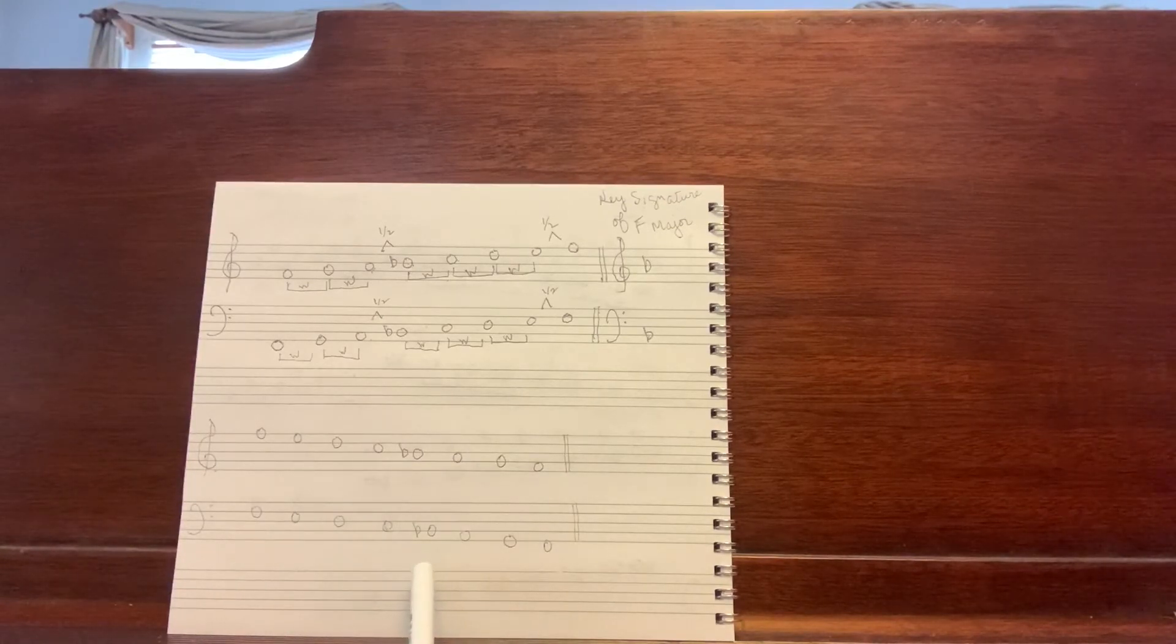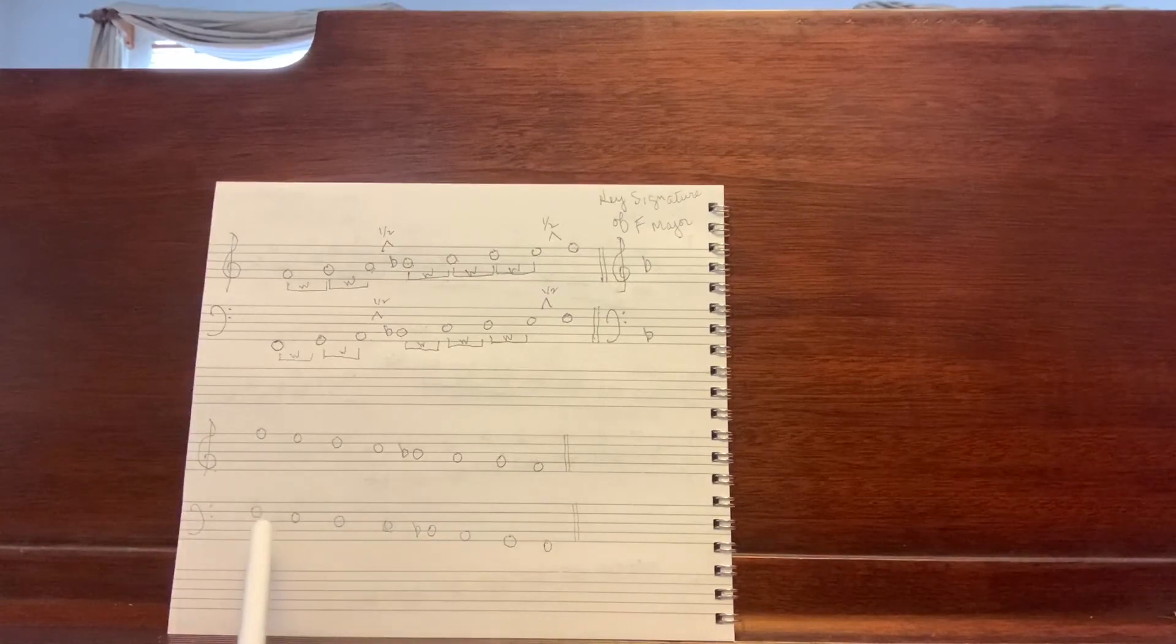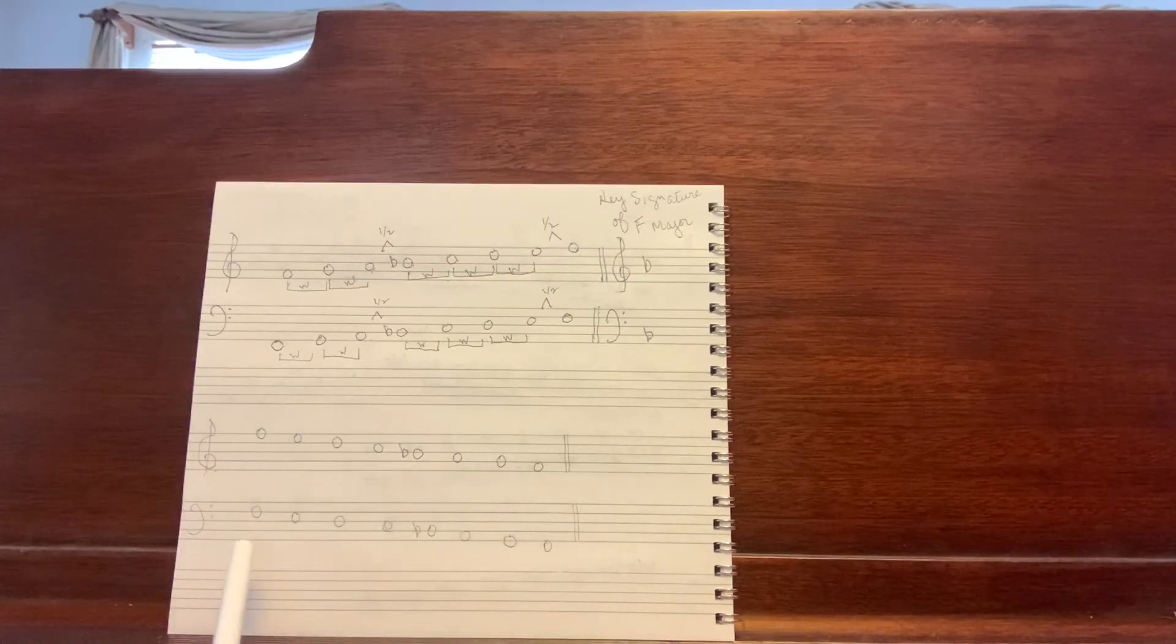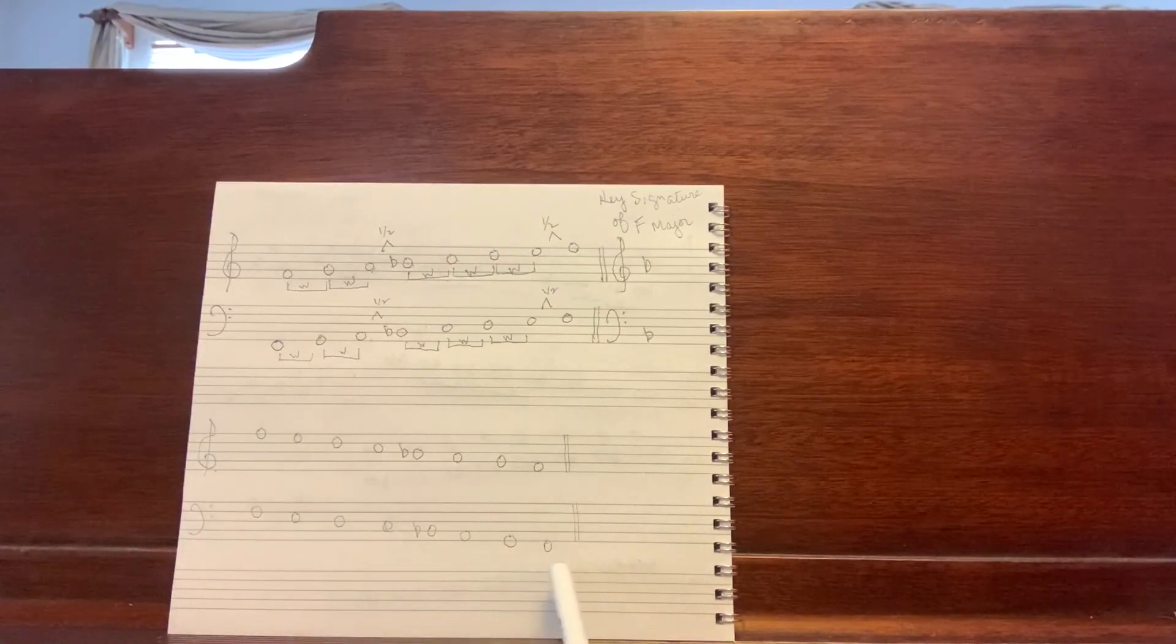All right. The next four: B, A, G, F. Again. Faster. Let's go from F to B. Faster. See if we can go right through: F, E, D, C, B, A, G, F. Again. And let's do it with the B flat now. Once again. Great. And that is our F major scale descending in the bass clef.